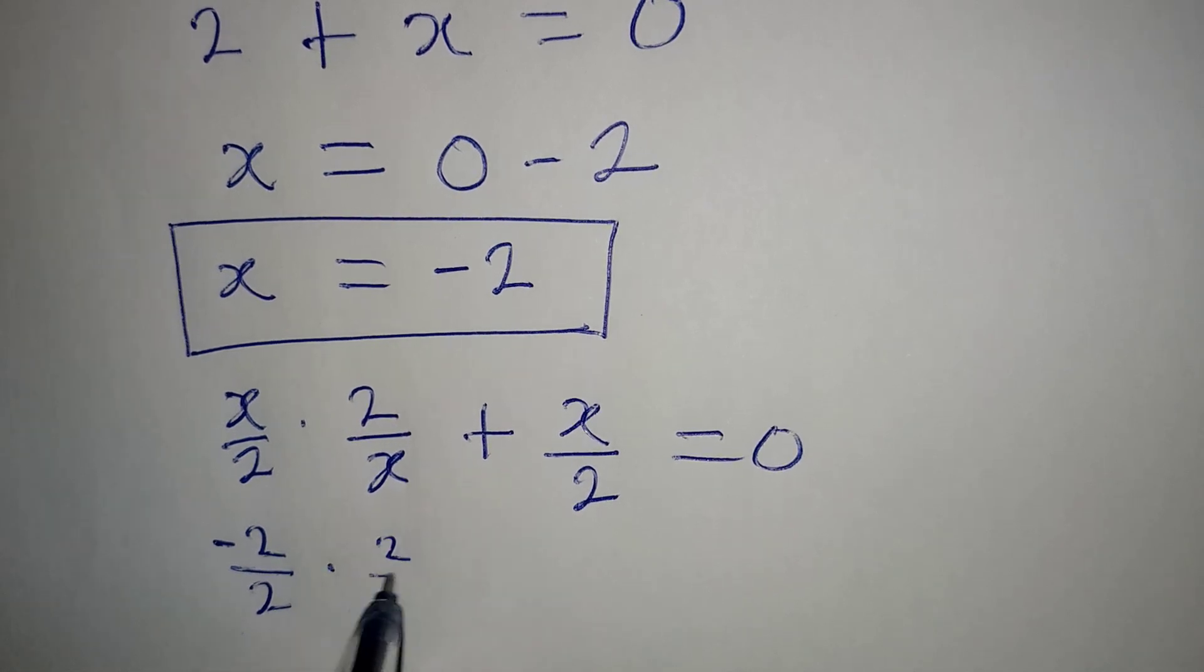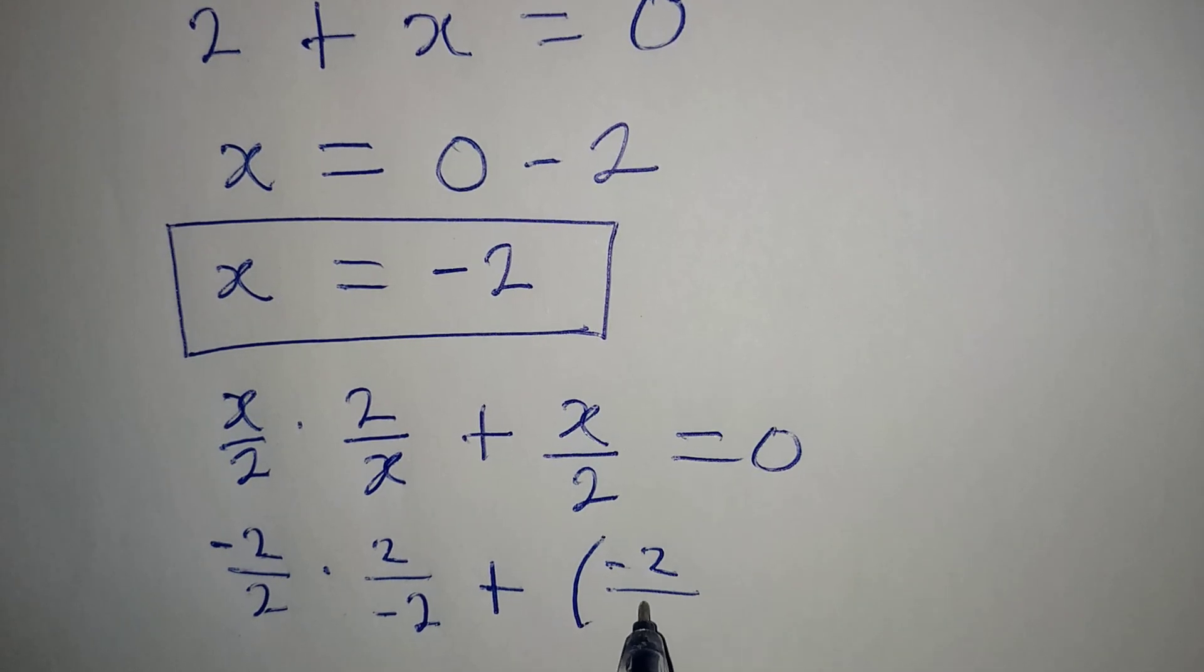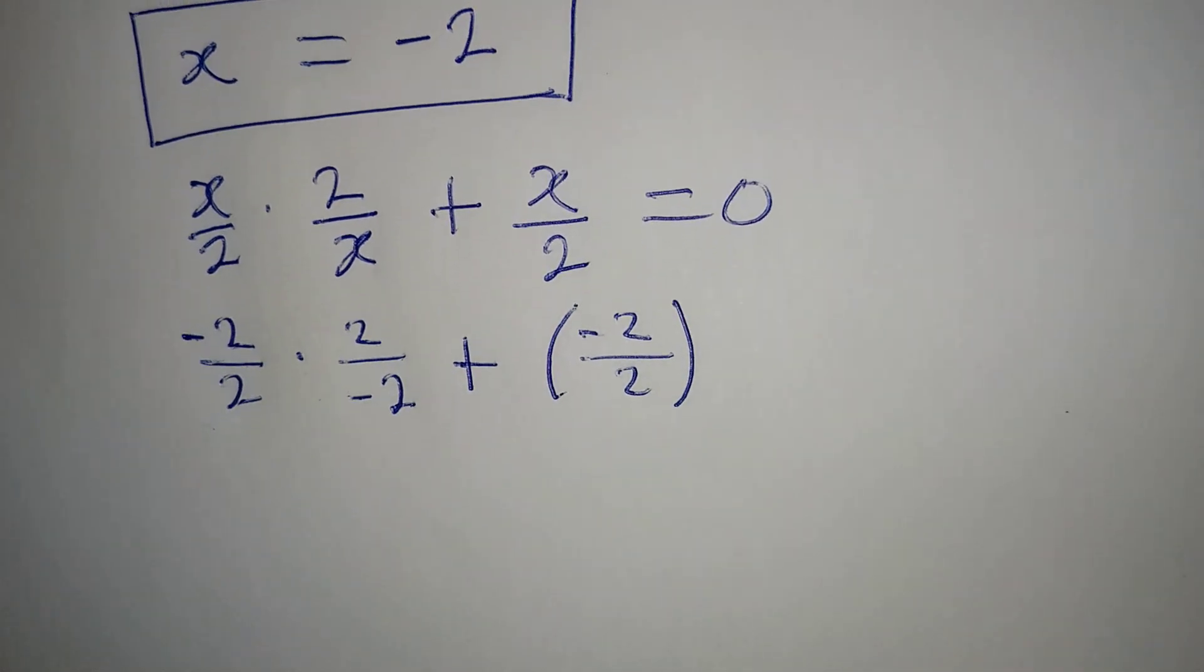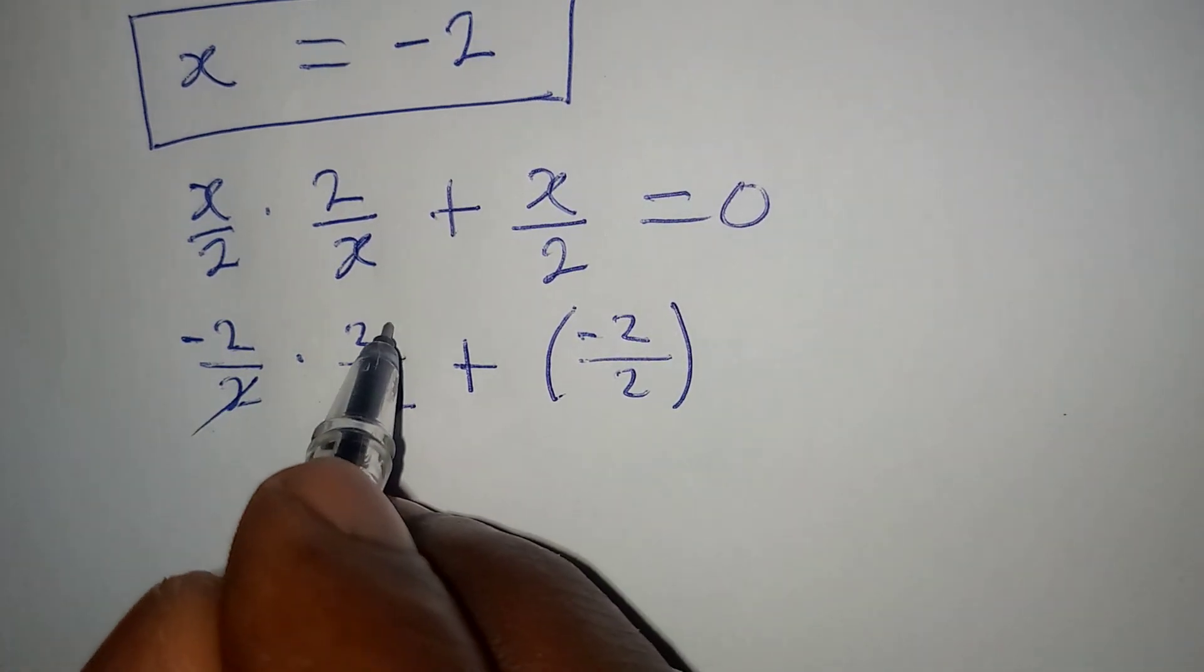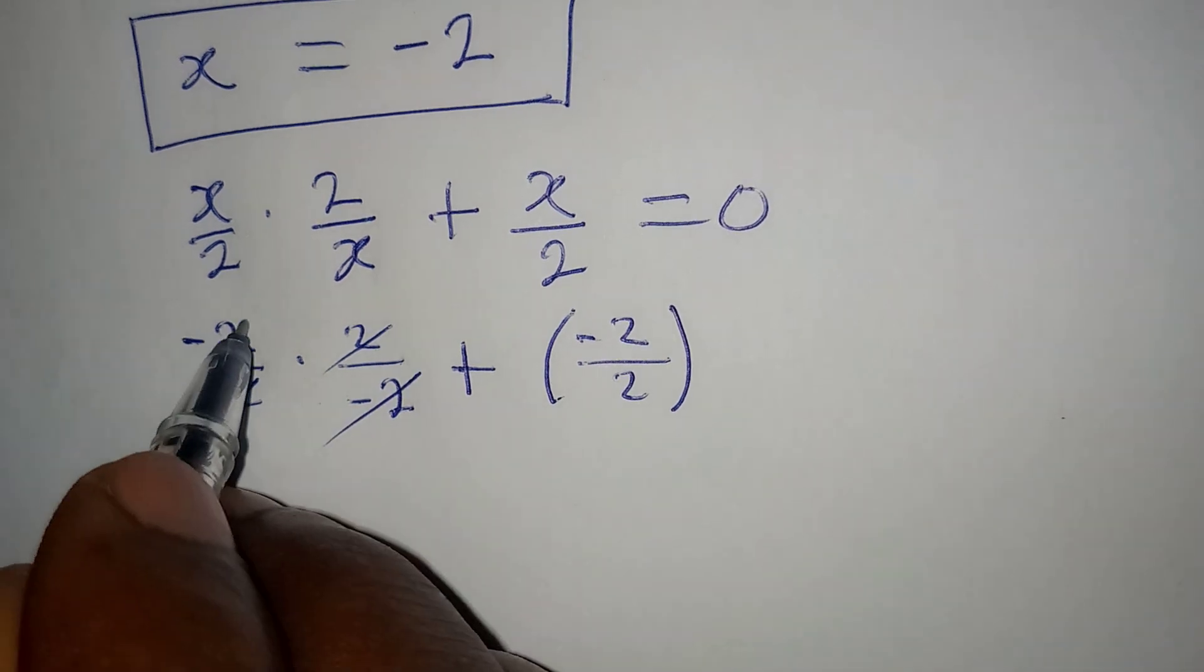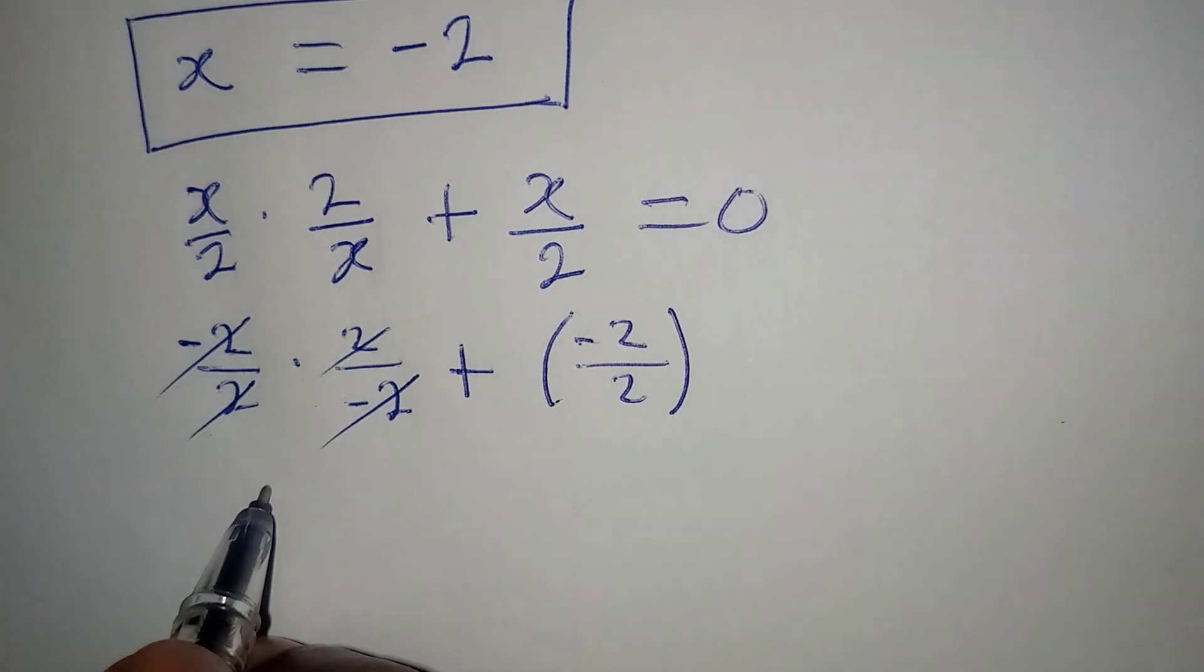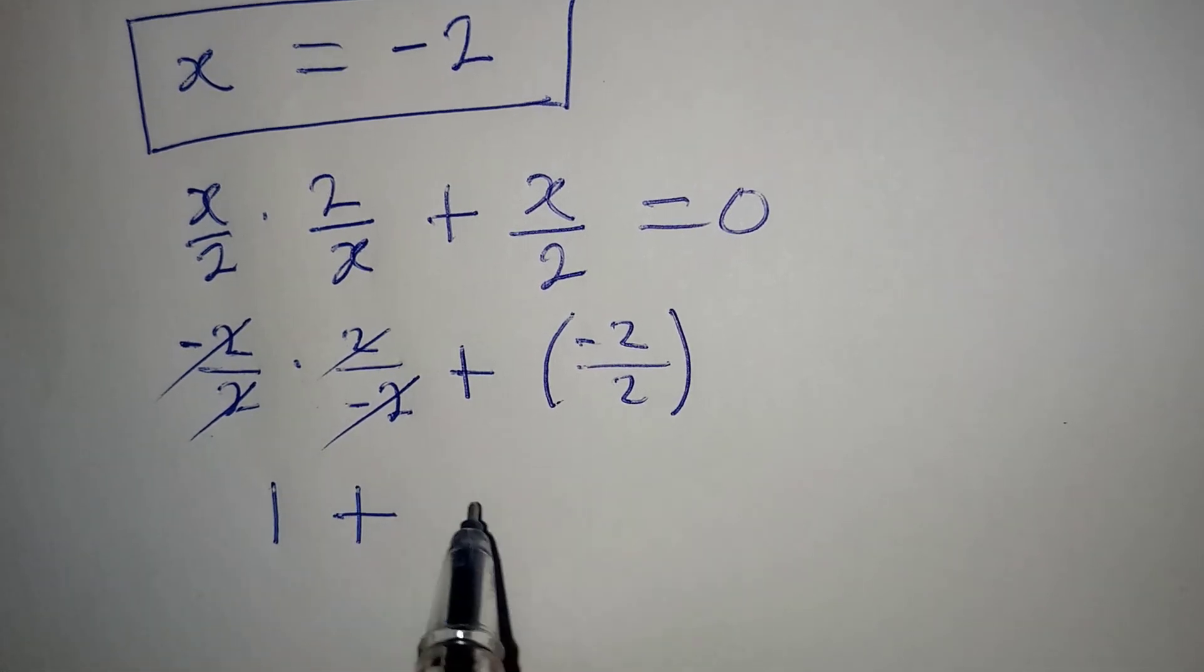So we have minus 2 over 2 multiply by 2 over minus 2, then plus open bracket minus 2 over 2. Now what will this give us? Because we now know that x is equal to minus 2 here, the whole of this will give us 1.